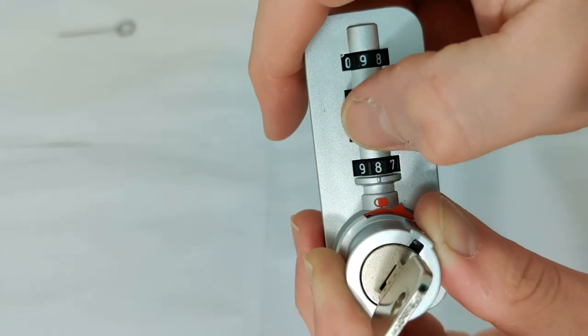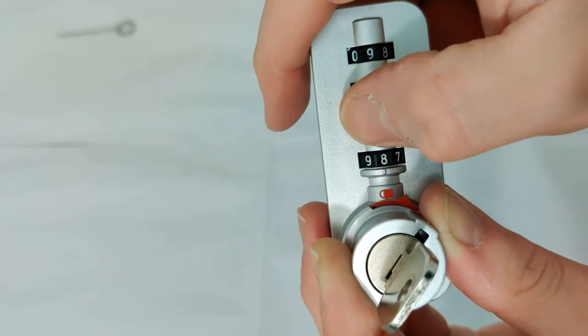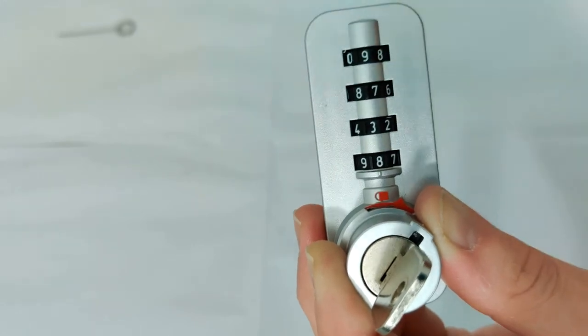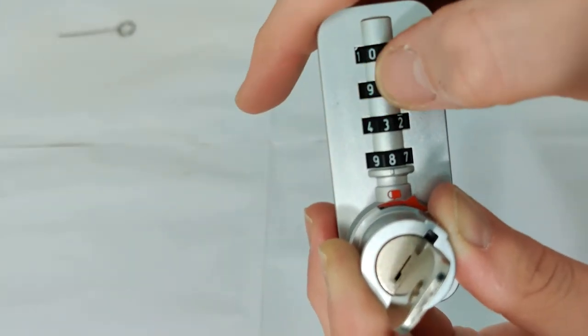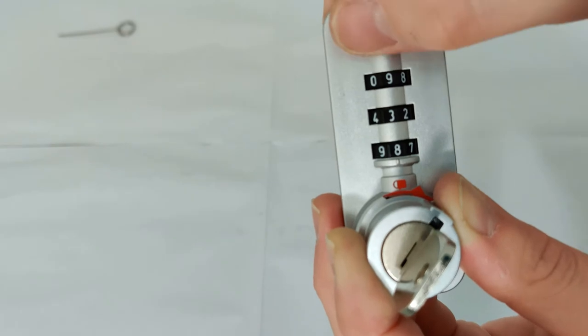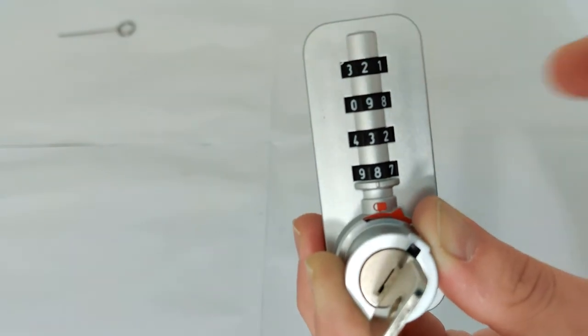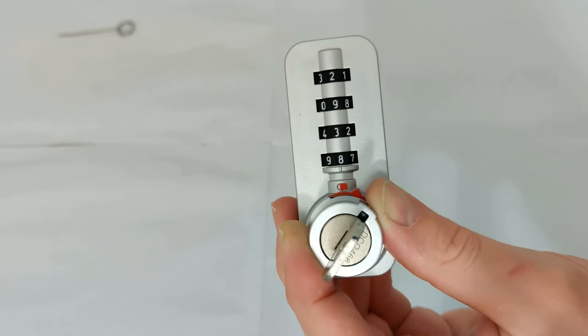Okay, now I'll turn the next one. We've got a three on that one. Onto the next, we have a nine. Onto the last one and now we have a two. Okay, so that should be the code.